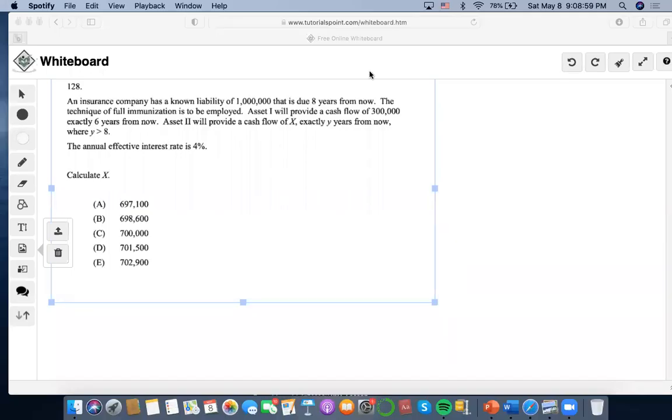Hi. So for this problem, it's a full immunization problem and it has a liability that's due eight years from now and two different cash flows, one of which has an ambiguous time value since it's denoted Y.